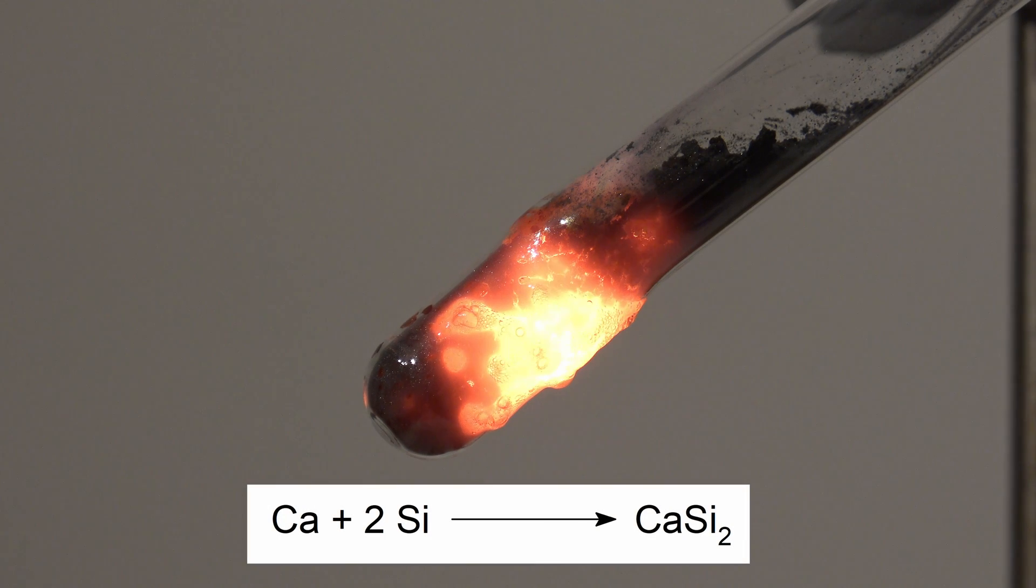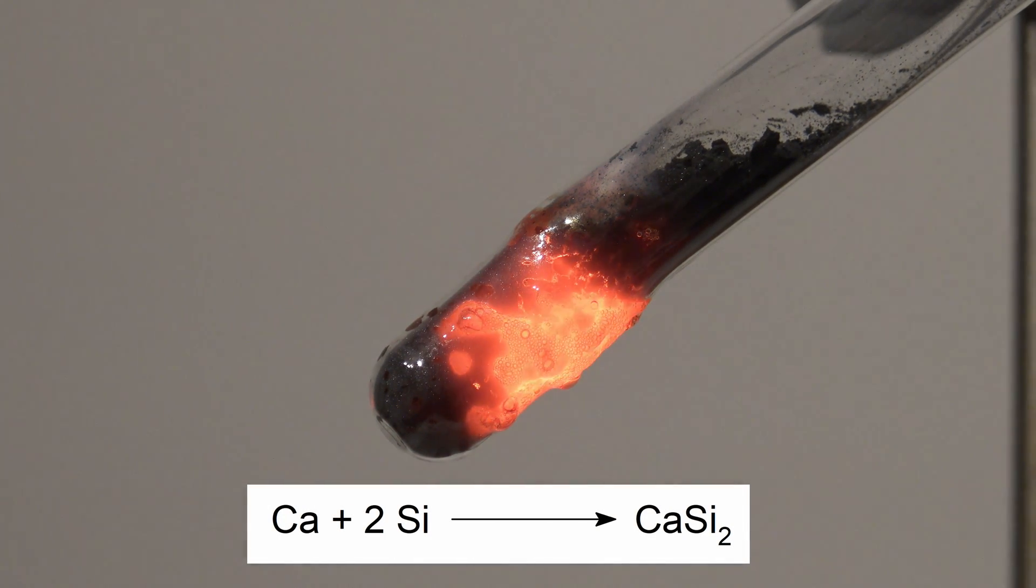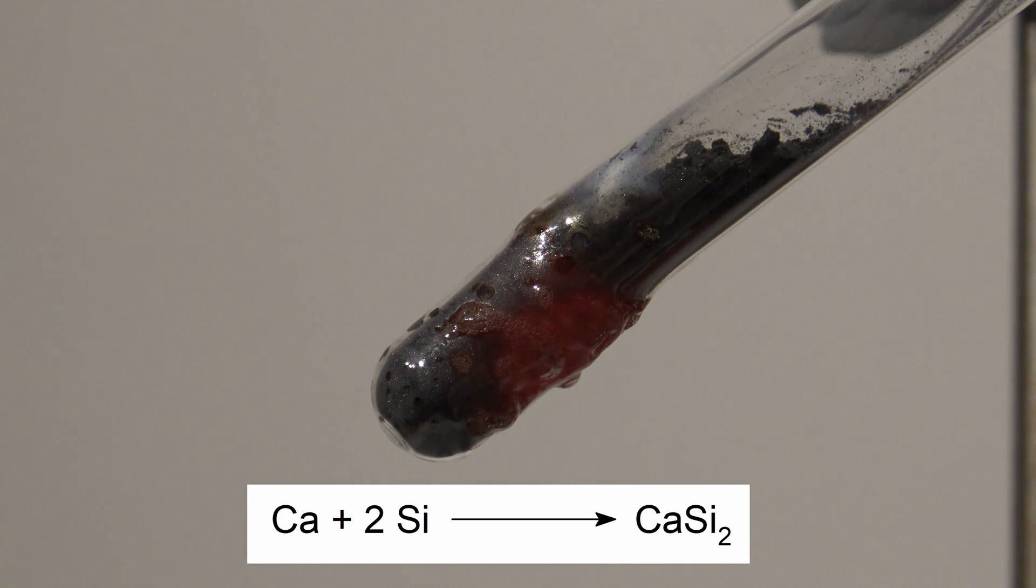The calcium reacts with the silicon to form calcium disilicide. It also reacts with the glass, leading to a less pure product. Nevertheless, this is not a problem for the following experiment, as quite a lot of side products are formed anyway.